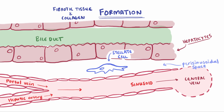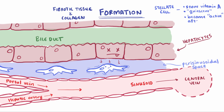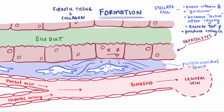The parasinusoidal space literally means around the sinusoidal space, and stellate cells are located about there. In healthy tissue, their main function is to store vitamin A, and they are otherwise considered quiescent, or dormant. When hepatocytes are injured, they secrete paracrine factors that activate and change the stellate cells. When activated, these stellate cells lose vitamin A, proliferate, and start secreting transforming growth factor beta-1, or TGF-beta, which causes them to produce collagen — the main ingredient in extracellular matrix, fibrosis, and then scar tissue.